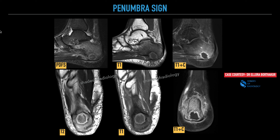These are the various sequences which were obtained — the PD-FATSAT sequence. You can see a well-defined lesion which is very obvious. On T1 you can see the lesion showing central T1 hypointensity with a hyperintense rim and again a hypointense rim, with extensive edema which is hypointense on T1 weighted sequence.